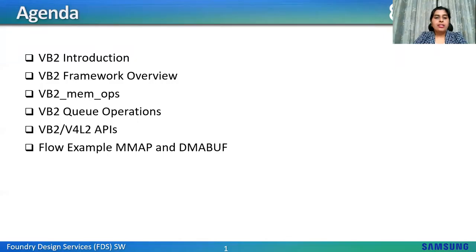The agenda for today will be: VB2 introduction and a brief insight into the evolution of VB2; VB2 framework overview, which will give a link from application to kernel to memory allocators; VB2 memops, which are the current memory allocators; how ops are linked to different allocators; VB2 queue operations for buffer management; VB2 V4L2 APIs; and a flow example using mmap and DMA-buf.